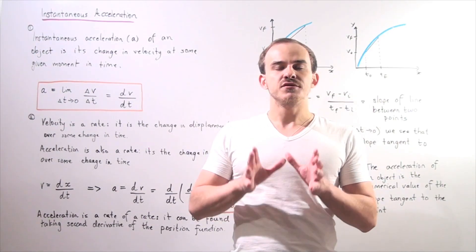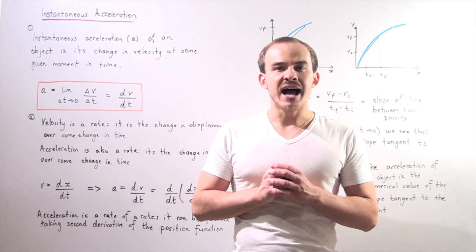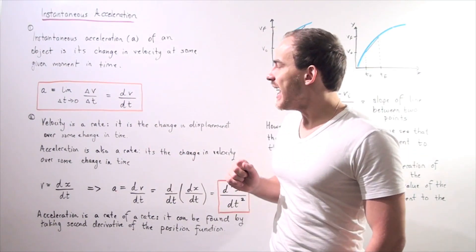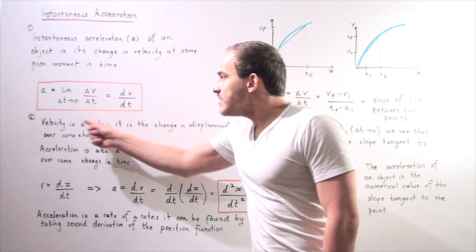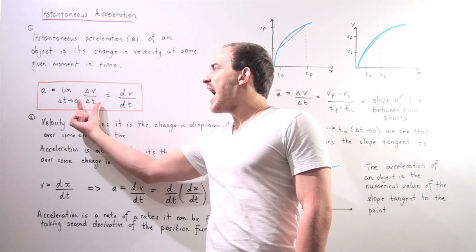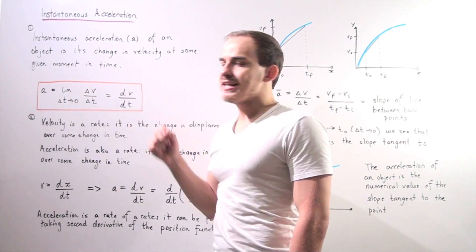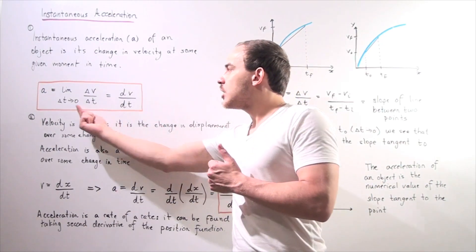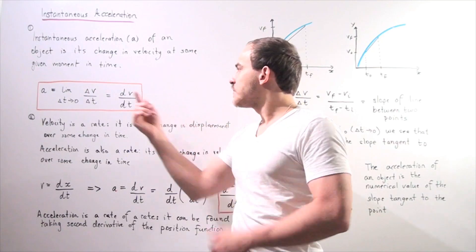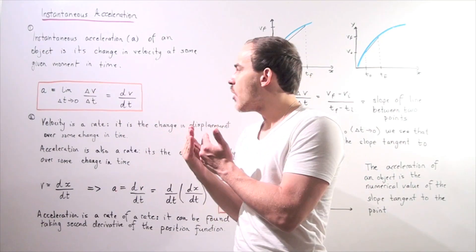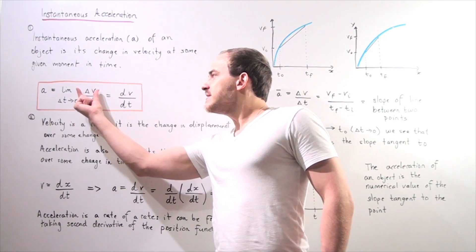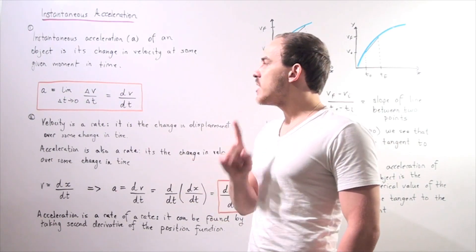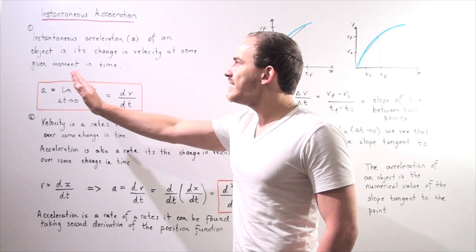Instantaneous acceleration is the change in velocity at some given instant in time. It's given by the following formula: acceleration, given by lowercase a, is equal to the ratio of our change in velocity to our change in time as we take the limit as our change in t approaches zero. As we keep choosing a change in t that gets smaller and smaller, our change in v also gets smaller and smaller. Eventually, the ratio will approach a numerical value, which is our instantaneous acceleration.